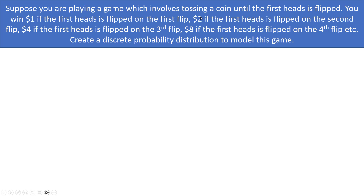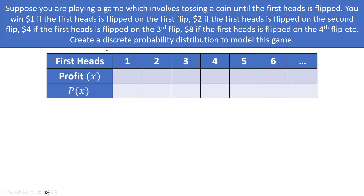Let's look at one last example. You're playing a game tossing a coin until the first heads appears. You win $1 if heads comes on flip 1, $2 if on flip 2, $4 on flip 3, $8 on flip 4, etc. We want to create a discrete probability distribution. Theoretically this continues forever — you could flip tails 100 times and then get heads on flip 101.